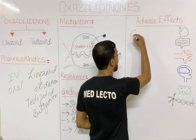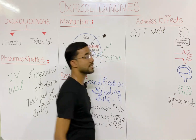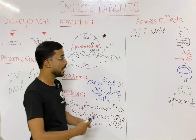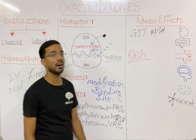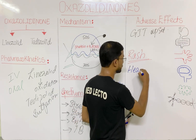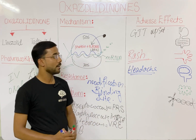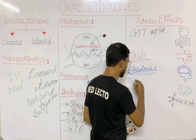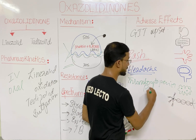The adverse effects of oxazolidinones include GIT disturbance — nausea, vomiting, and diarrhea — as well as skin rash and headache. Another important adverse effect is thrombocytopenia, which means a low platelet count.